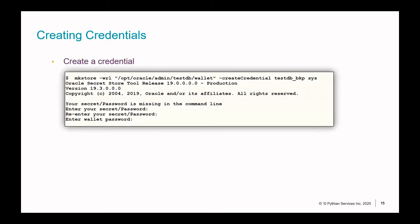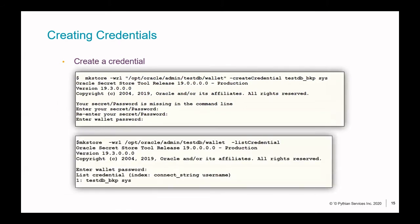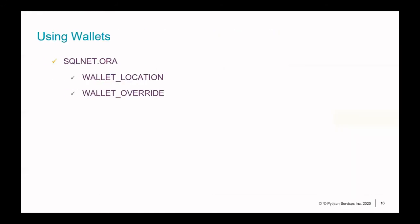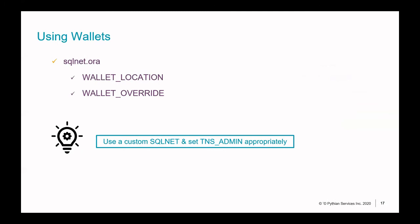To create a credential — something you store in the wallet — you again use mkstore, providing your command-line options and password. For example, to store a credential for user SYS with alias 'testdb_bkp', you run the appropriate command. Once created, you can list and view your credentials. To use the wallet, there are a couple of sqlnet.ora parameters: one gives the wallet location, and another enforces the use of the wallet.